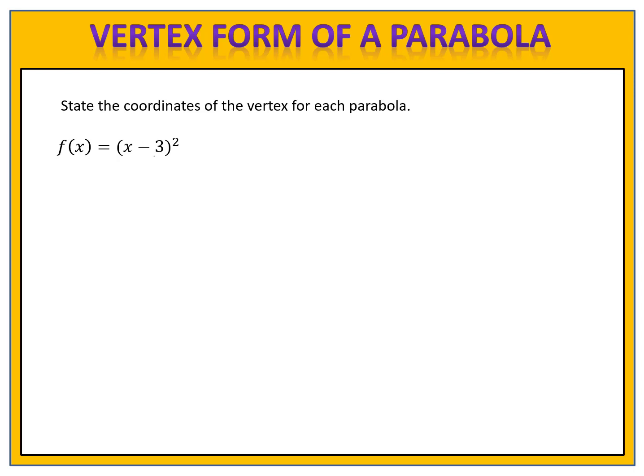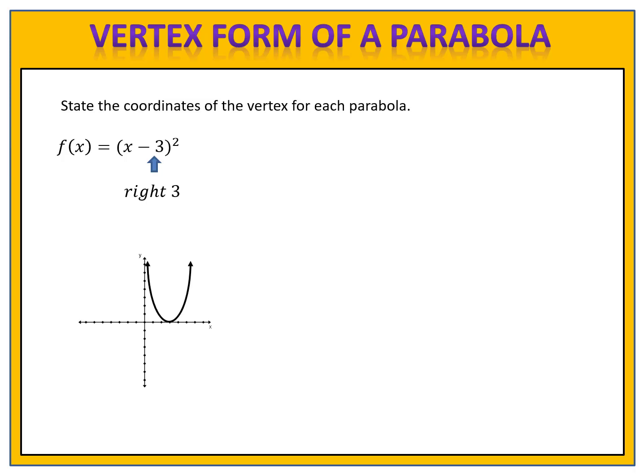How about this one? f of x equals x minus 3 squared. Can you find the coordinates of the vertex? Pause the video here and take a moment. We begin by identifying the shift: we have a minus 3 in the parentheses, which means we'll go to the right 3. When we move our parabola to the right 3, the coordinates of our vertex are at (3, 0).